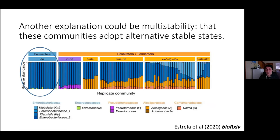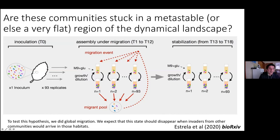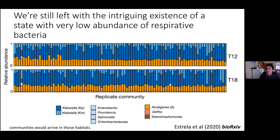To test that hypothesis, we connected the habitats: at the end of every transfer we pooled species from all wells and redistributed across all wells, so every well received migrants from all others. This might give the populations the push they need to jump over the tipping point and converge to one of the two alternative states. We repeated the experiment — keeping migrants from the regional pool or globally connecting all communities — for 12 transfers, then allowed stabilization for six more.